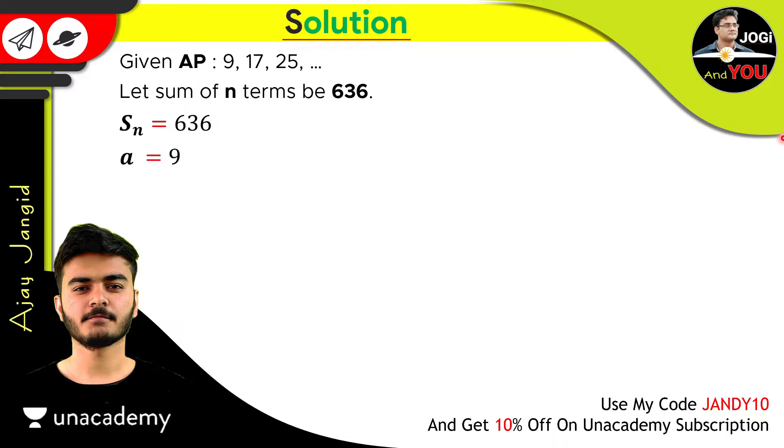Just like a, which is our first term, equals 9. And the difference between two consecutive terms, d is equal to 17 minus 9, which is 8. And it's also called common difference for an AP. So next term minus previous term is d.